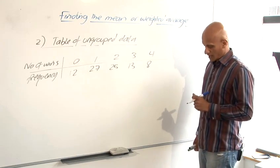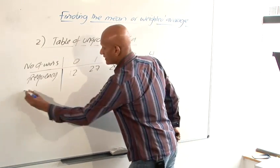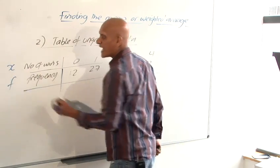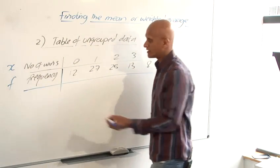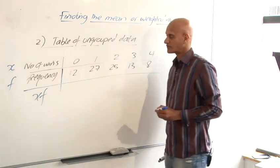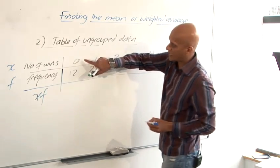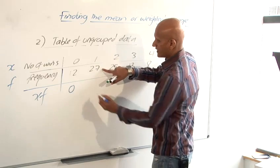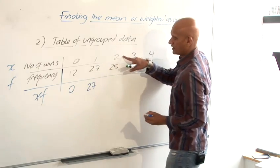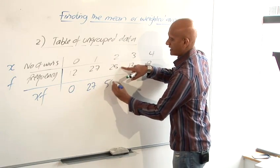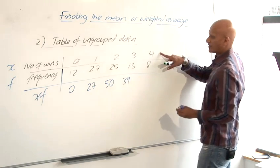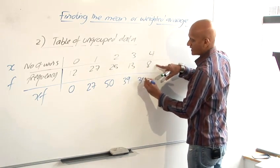What we're going to do, first of all, is we're going to add in a new row. If I call these x and I call these f, then my new row is going to be called xf. And it's found by multiplying these two together. So 0 times 12, 0. 1 times 27, 27. 2 times 25 is 50. 3 times 13 is 39. And 4 times 8 is 32.